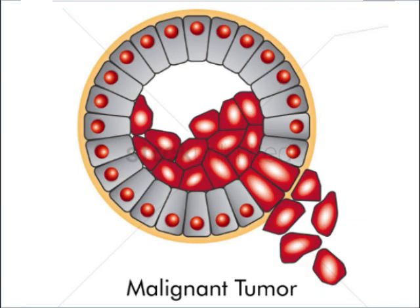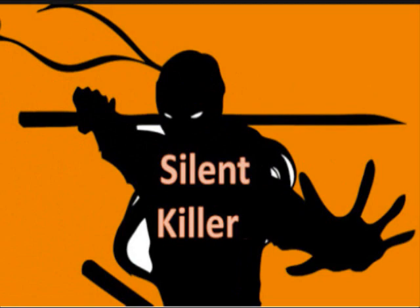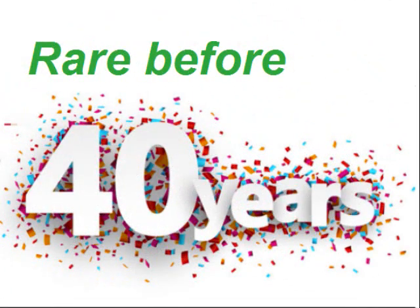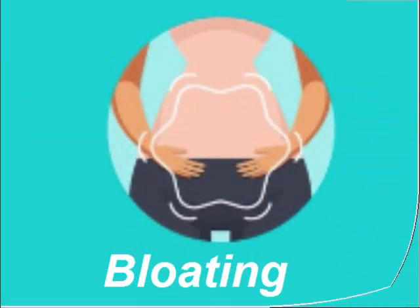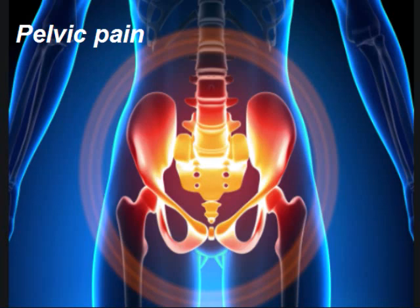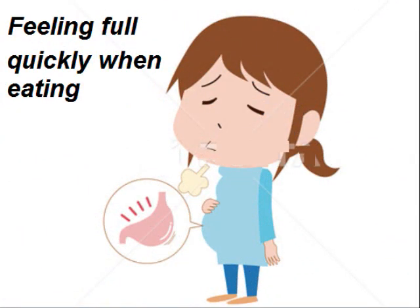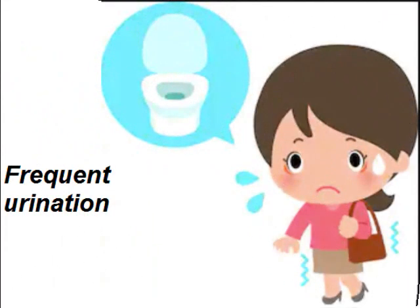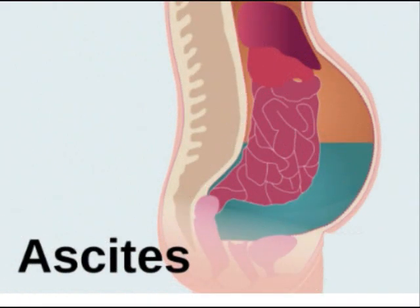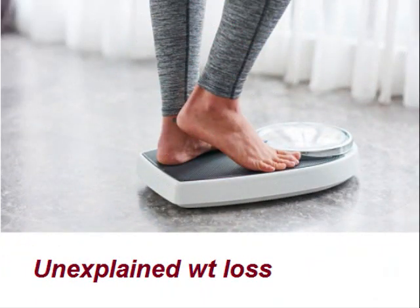Primary ovarian cancers are malignant tumors — they are silent killers. 75% are diagnosed with advanced stage disease, and the 5-year survival is only 10–28%. They are rare before 40 years of age. They present with bloating sensation, menstrual disorders, pelvic pain, feeling full quickly when eating, frequent urination, and change in bowel habits.